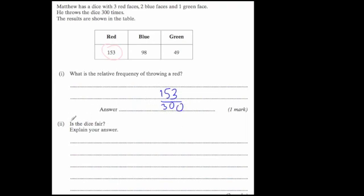The next part then says, is the dice fair? Explain your answer. Now, looking at it really quickly, you might think, oh well, there's a lot more reds than greens. But we need to go back up to the beginning of the question. It says, there's three red faces, two blue faces, and one green face. And he throws it 300 times. So that means that what we need to do is work out how many times we'd expect red, blue, and green.